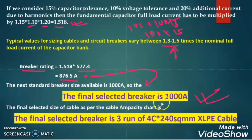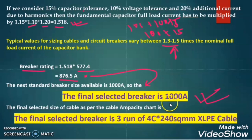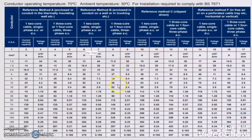Since the final selected breaker is 1000A, from the cable ampacity chart we can get the cable size. We need to choose a cable which can carry a current of 1000A. From the technical data sheet, the 240 sq mm cable can carry a current of 430A. So if we choose 3 runs of 240 sq mm cable, it will carry a current of more than 1200A, making it a good choice.